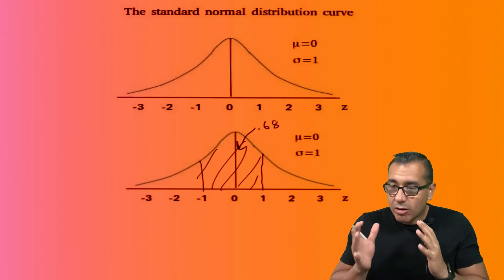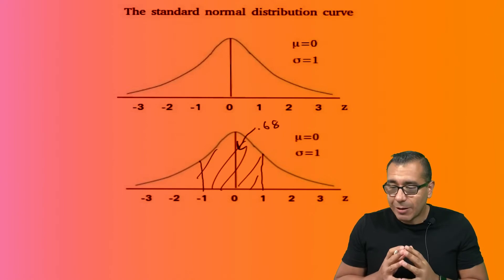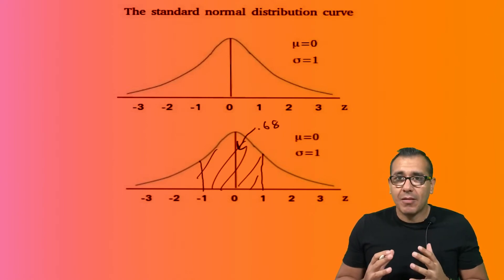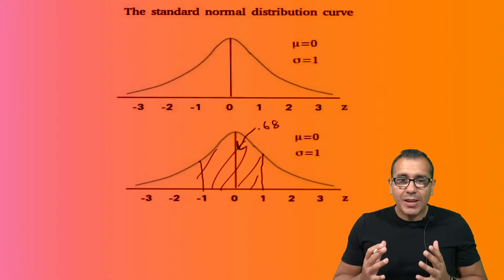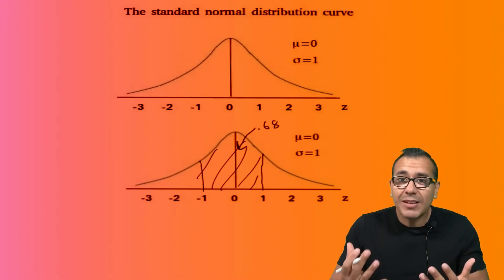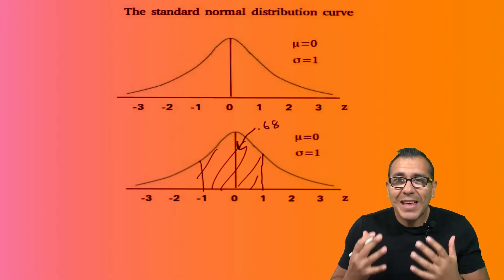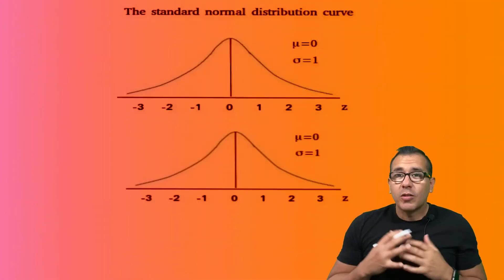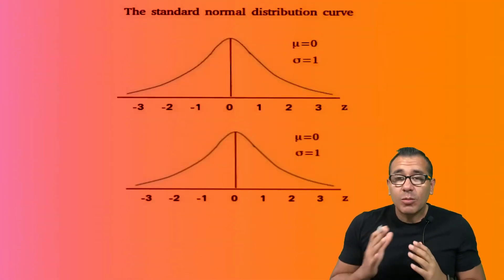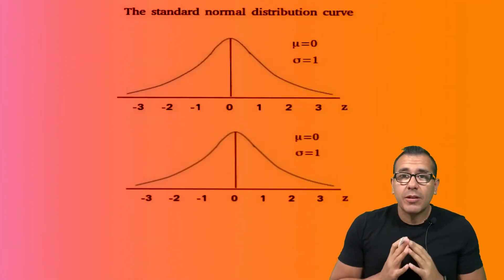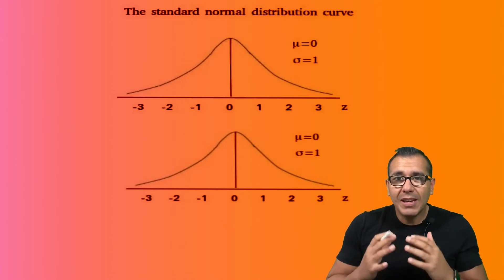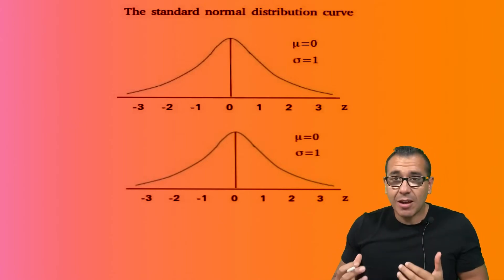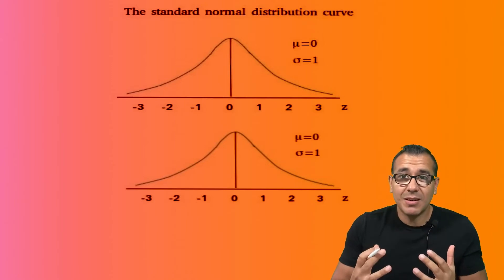This is where our standard normal distribution curve is really going to help us out. What happens when we have some messier numbers — not exactly one standard deviation? That's what we want to take a look at today.